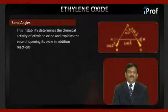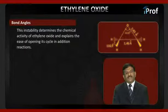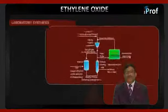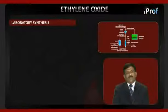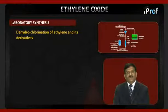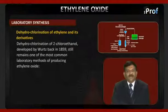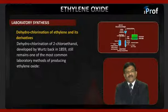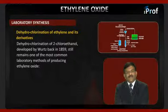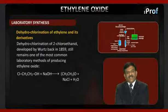The instability determines the chemical activity of ethylene oxide and explains the ease of opening its cycle in addition reactions. In the laboratory, ethylene oxide is prepared by dehydrochlorination of 2-chloroethanol — a method developed by Wurtz in 1859 — which still remains one of the most common laboratory methods. The reaction is: ClCH2·CH2OH + NaOH → CH2CH2O + NaCl + H2O.